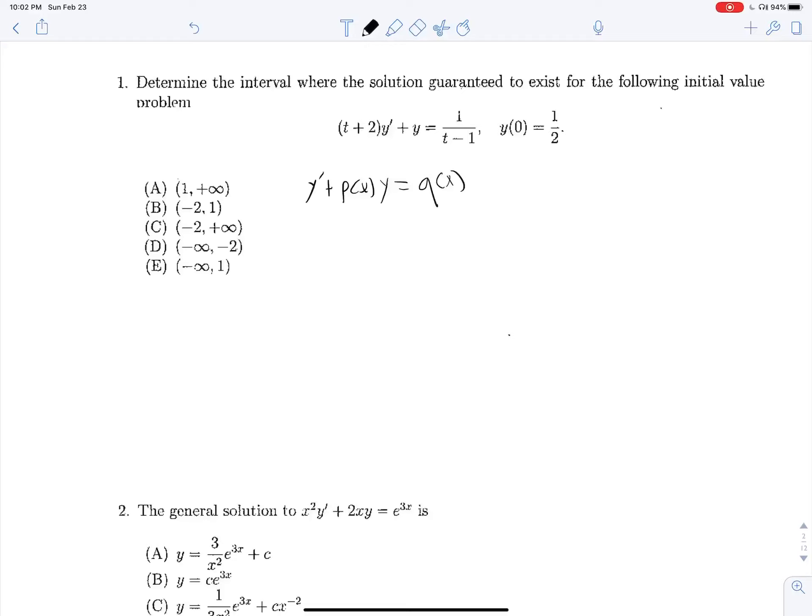So let's put our equation into this form and see what we can do. So that would be y prime plus 1 over t plus 2 y is equal to 1 over t minus 1 t plus 2. There we go. And we see that both of these, or collectively, they are undefined when t is equal to either negative 2 or 1.